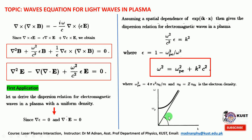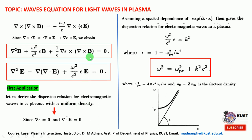Once plasma is present, dispersion occurs due to the plasma, modifying the propagation of electromagnetic waves. This situation applies to the uniform density profile. We will examine aspects of this expression before moving to the solution for non-uniform plasma with density gradients. For that case we will switch to the WKB solution for wave propagation in the next class.